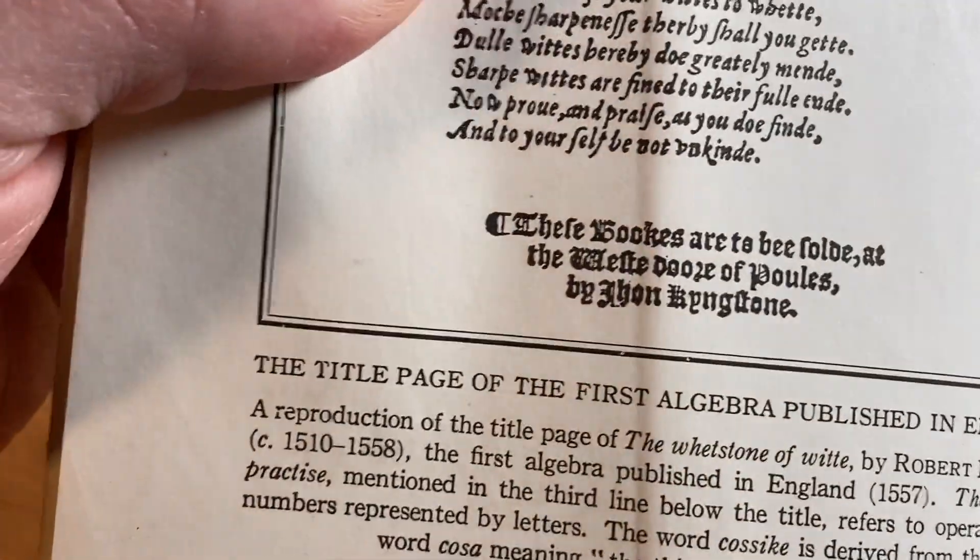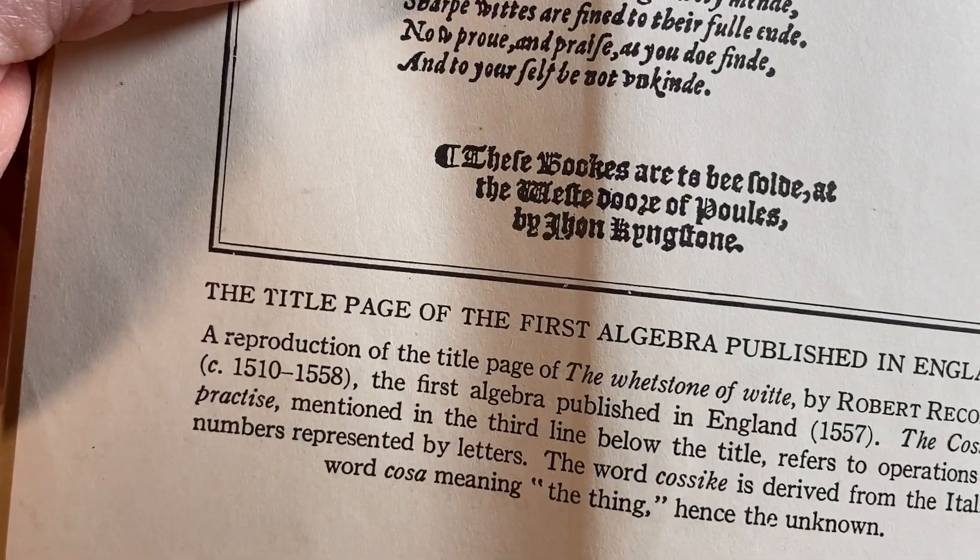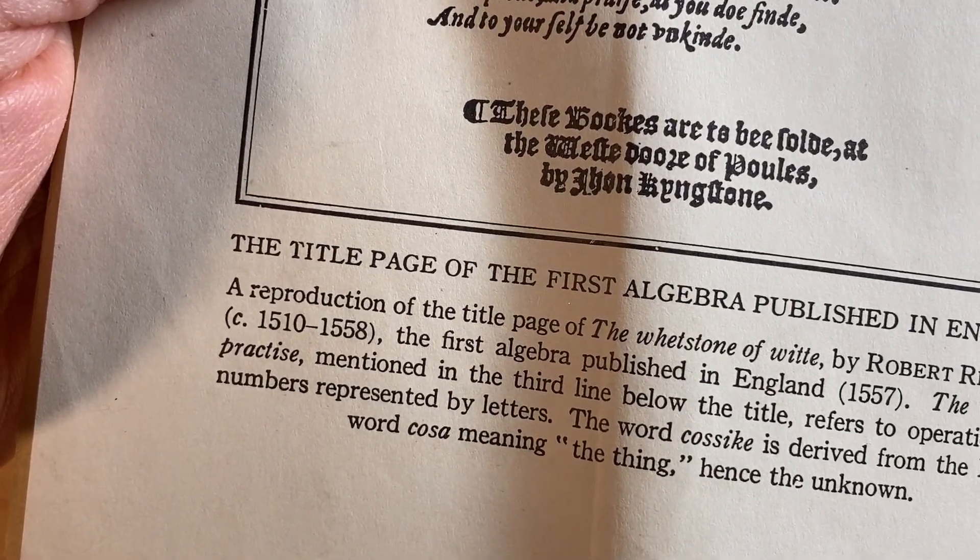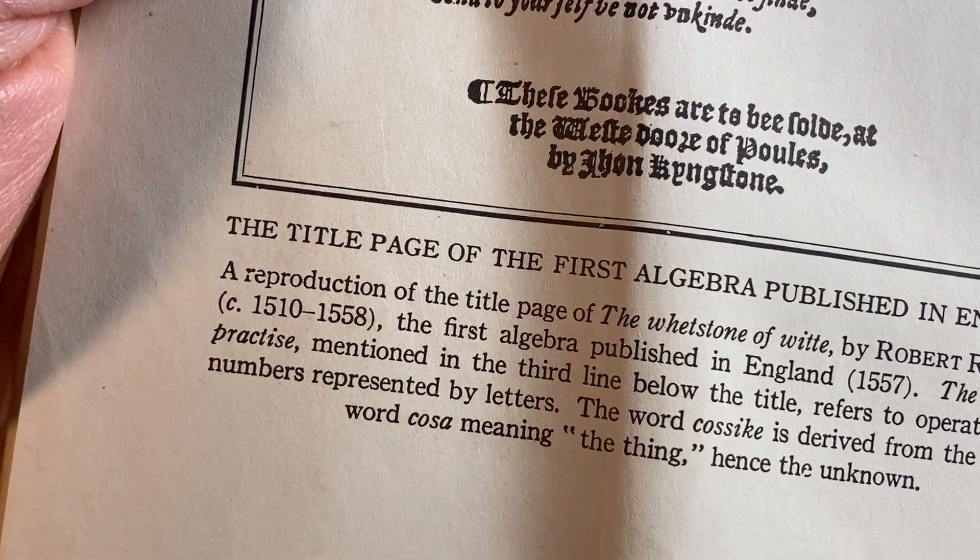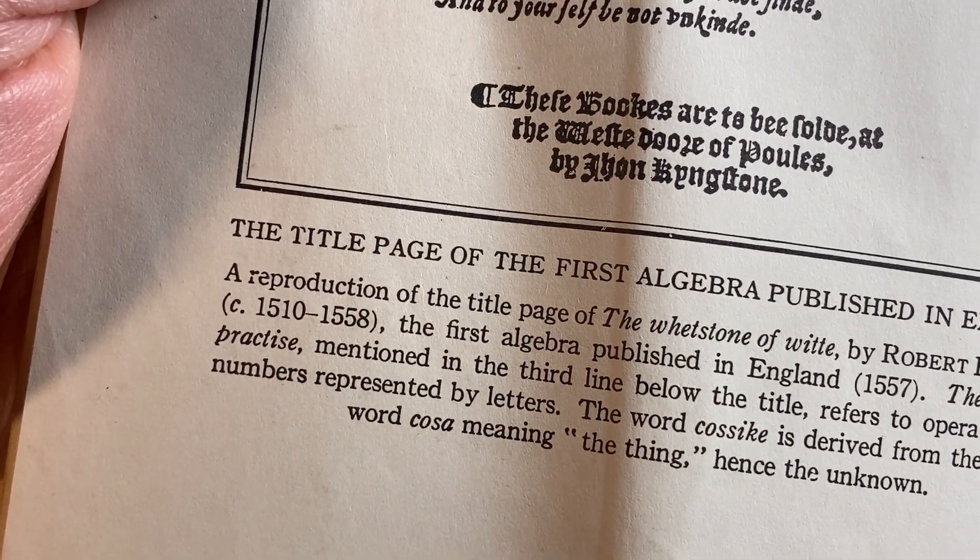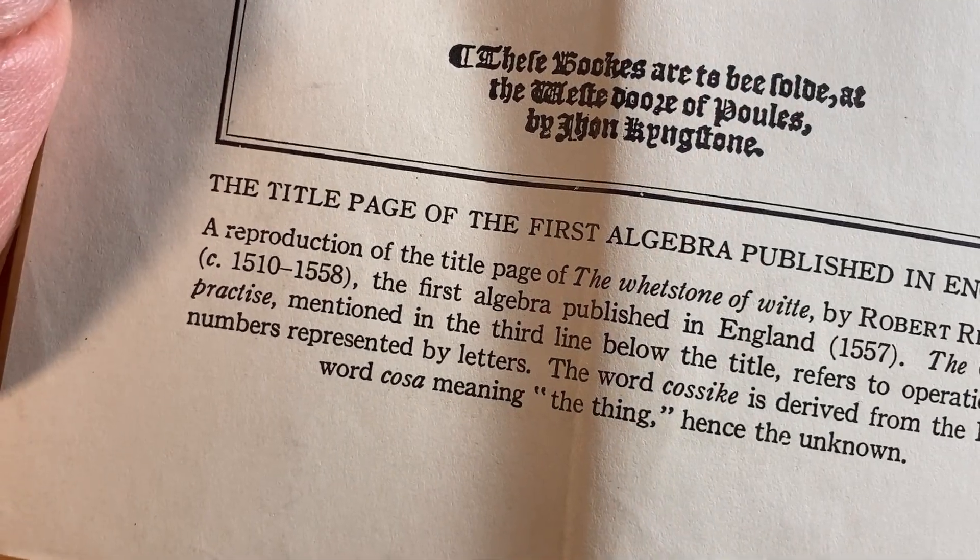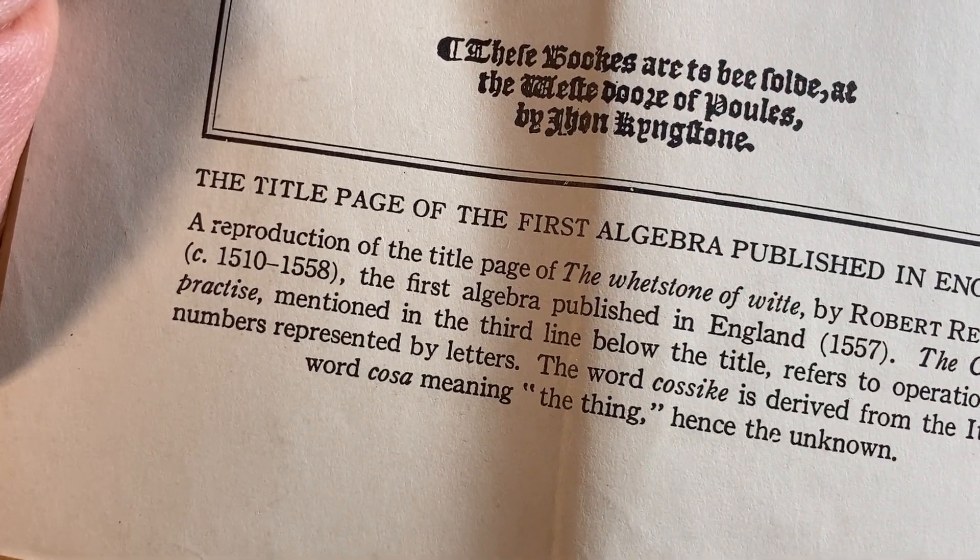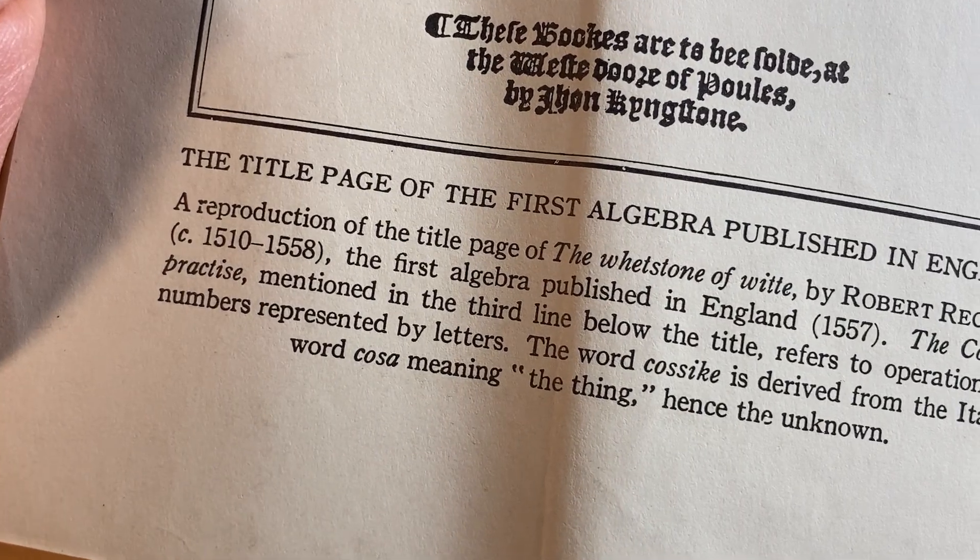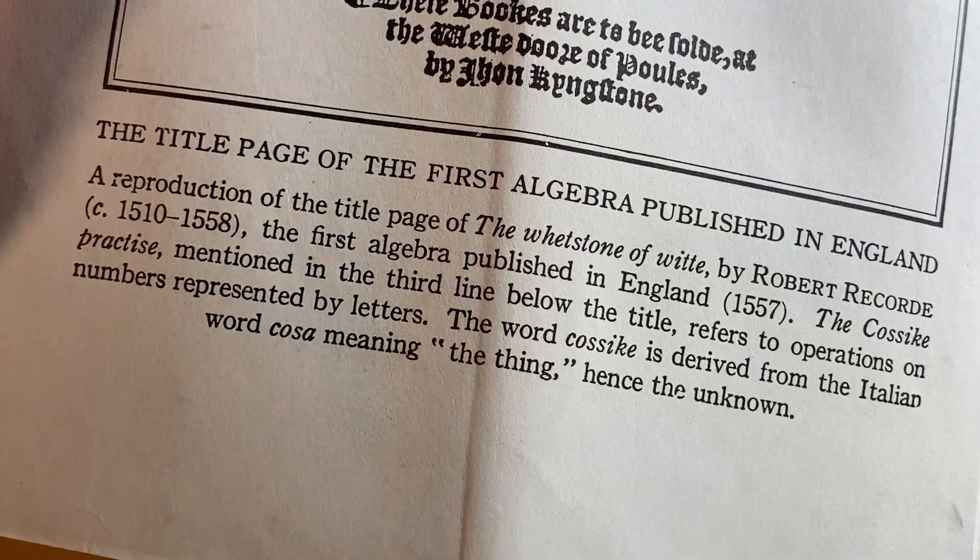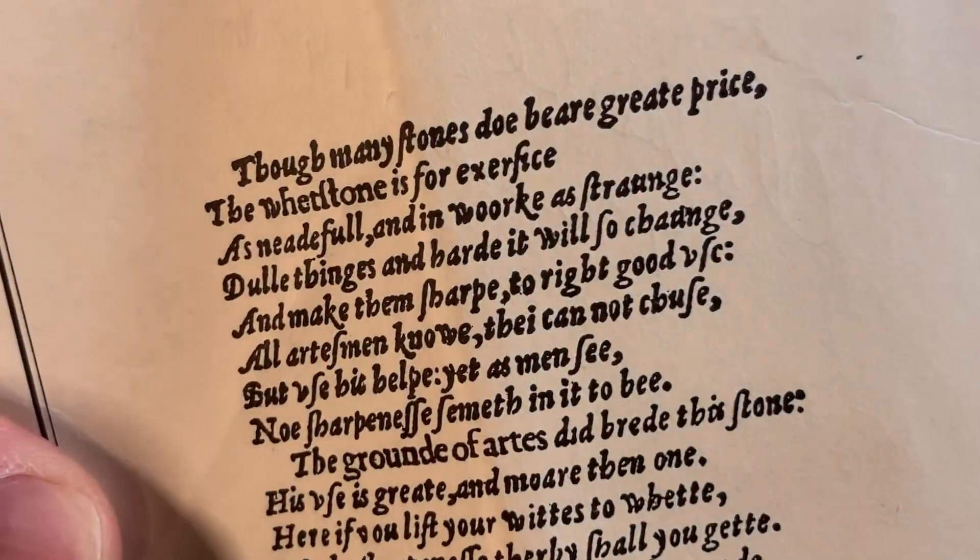This is the title page of the first algebra published in England, a reproduction of the title page of The Whetstone of Wit by Robert Record, 1510 to 1558, the first algebra published in English, 1557. The cossic practice mentioned in the third line below the title refers to operations on numbers represented by letters. The word cossic is derived from the Italian word cosa, meaning the thing, hence the unknown.